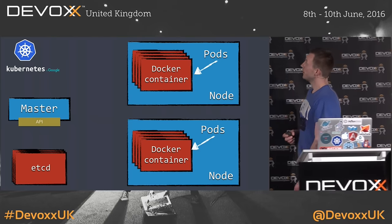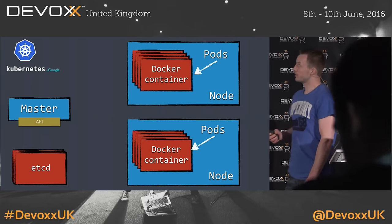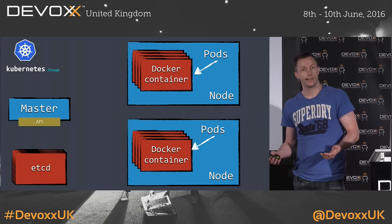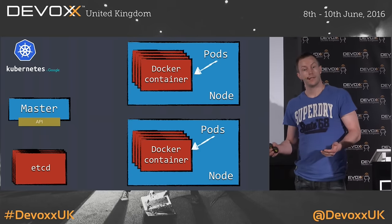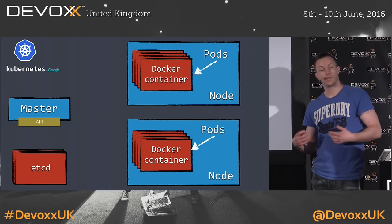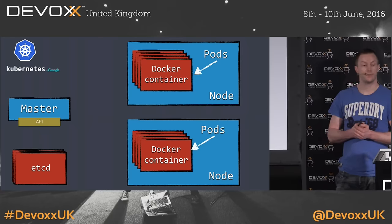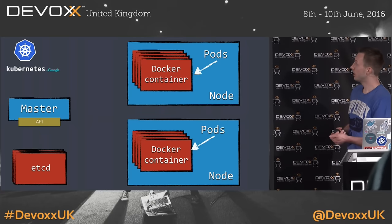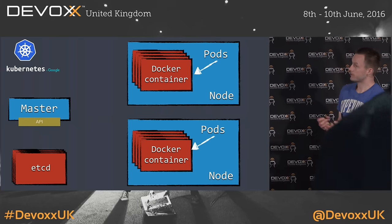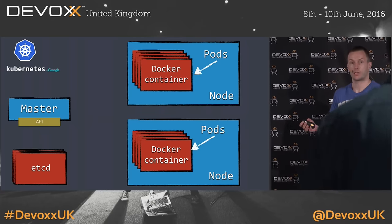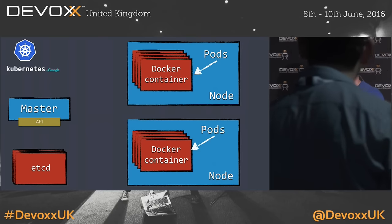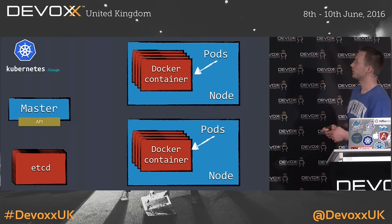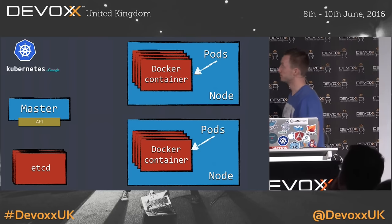Kubernetes doesn't actually just talk about Docker containers or containers in the first place. It has an abstraction on top of that, which is called pods. A pod is kind of an abstraction on top of this container, and we will get a little bit deeper into that in a moment.